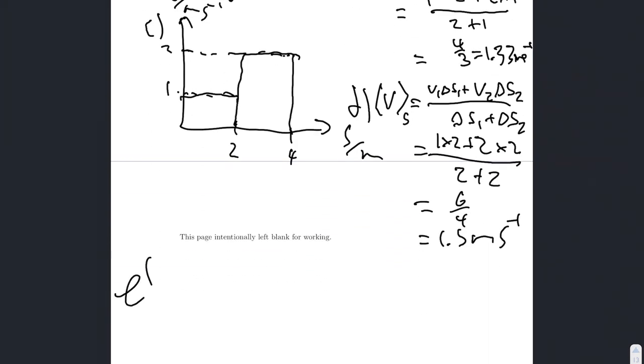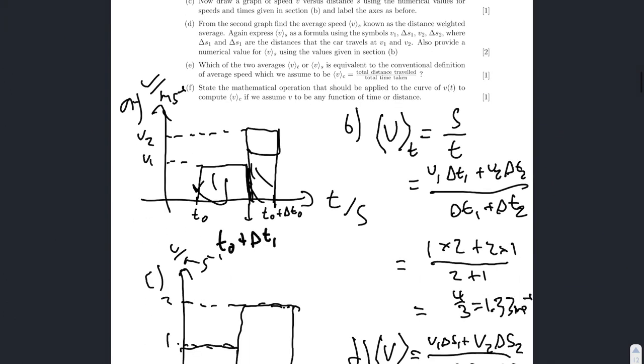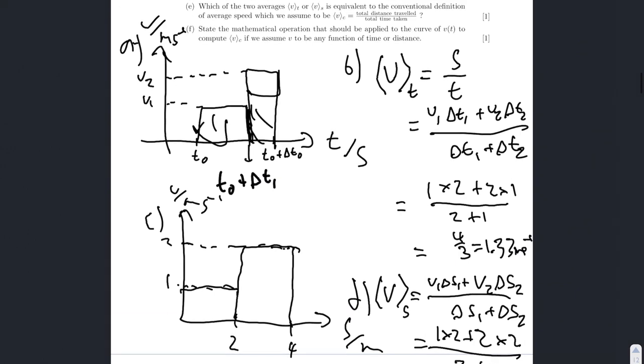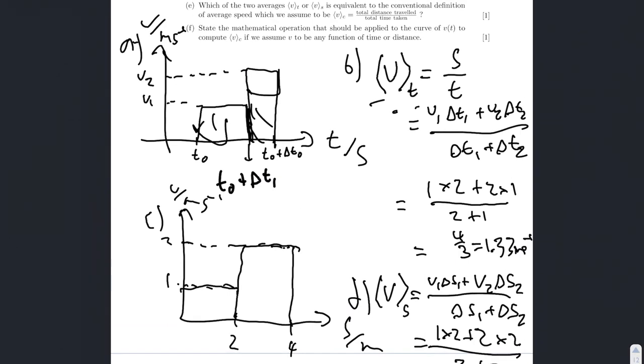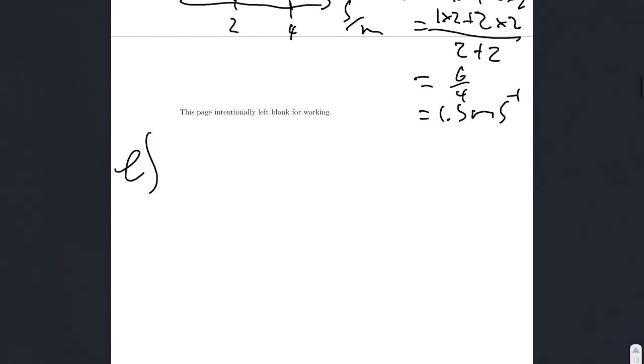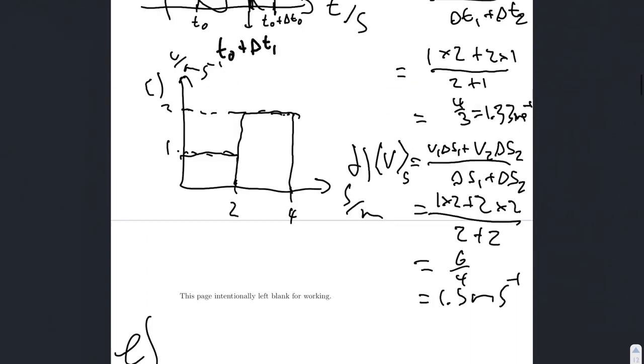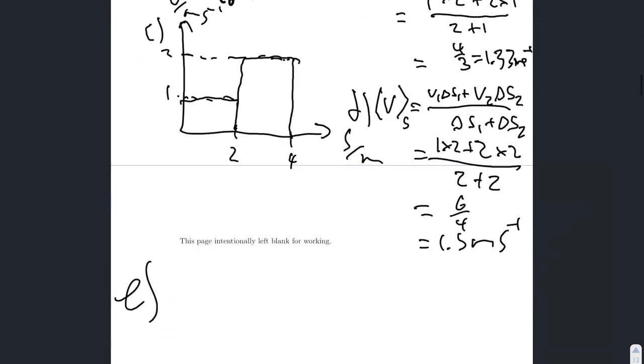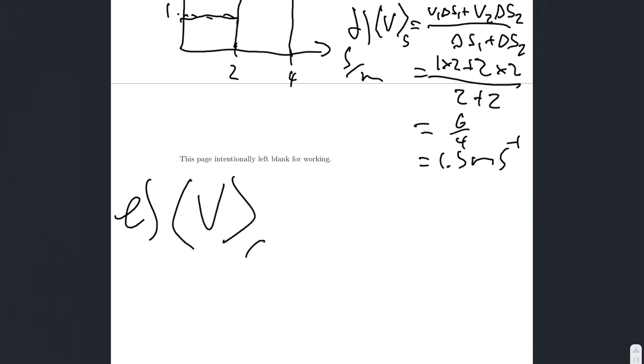So, now, part e, we have which of the two averages is equivalent to the conventional definition of average speed. Well, that is clearly the time weighted average, because it's total distance over total time. So, we know that v of c equals v of t.